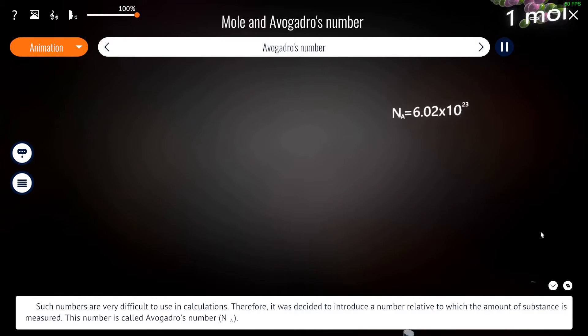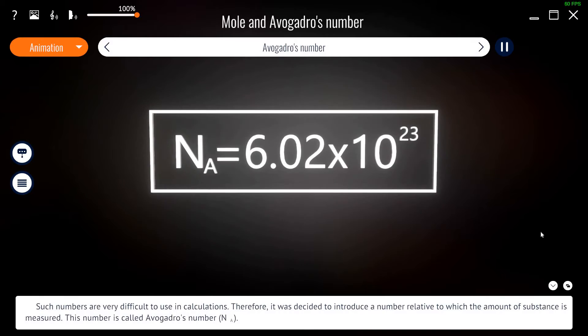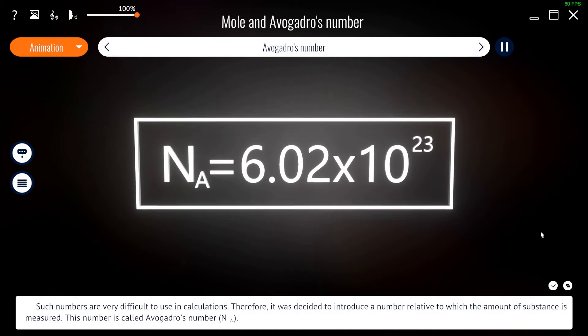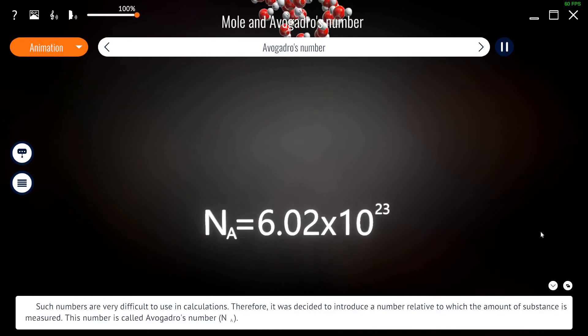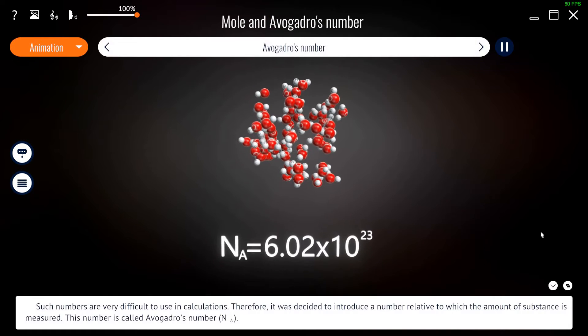Such numbers are very difficult to use in calculations. Therefore, it was decided to introduce a number relative to which the amount of substance is measured. This number is called Avogadro's number.